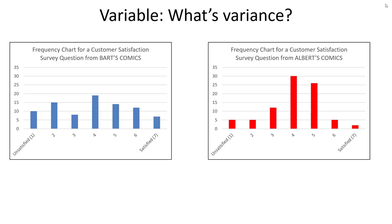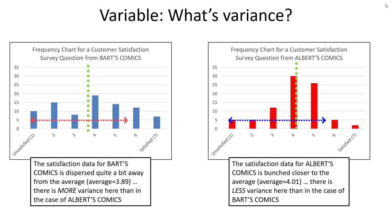As another visual example of what variance is, let's imagine two comic book stores each asking a customer satisfaction question. Bart's Comics is on the left and Albert's Comics is on the right. Notice how the average customer satisfaction score is nearly the same for both stores. However, the dispersion of the data is not equal — Bart's Comics responses range in a much more dispersed fashion away from the average.